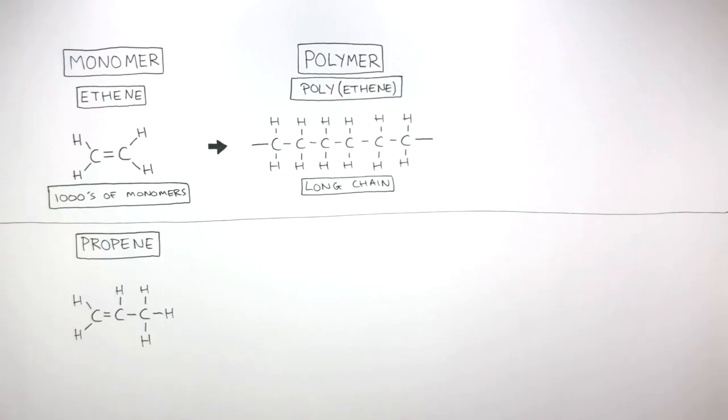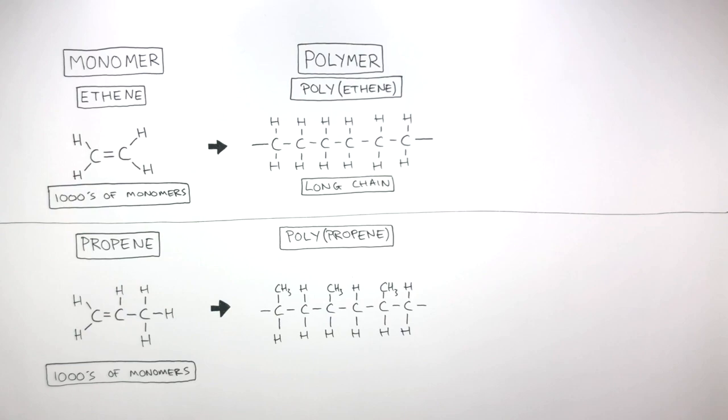In another example, this displayed formula, propene, C3H6, represents the thousands of monomers needed to be added together to form the polymer polypropene, represented by the small section of the long chain of polypropene.